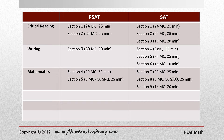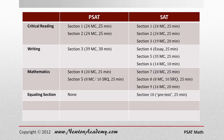In the SAT, there is something called an equating section. It is sort of a pre-testing or experimental section that the College Board places on the test. It could be in any of the three categories — critical reading, writing, or math — and it does not count towards the final score.